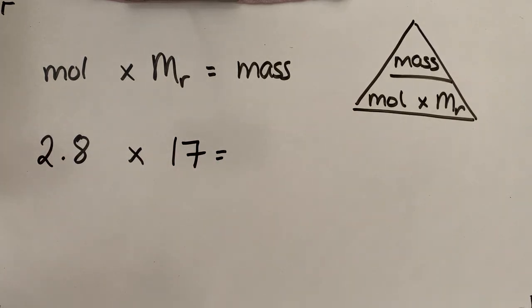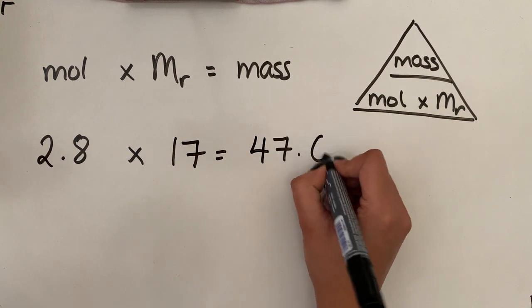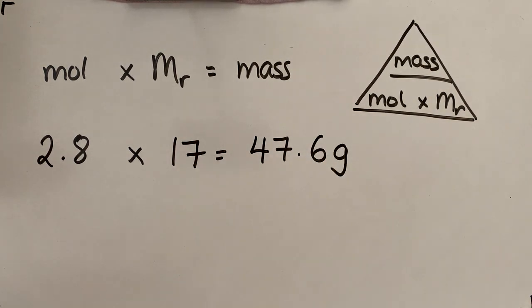So all we do is 2.8 times 17. And our mass is therefore 47.6 grams like so. Fairly straightforward to keep working through those. You've worked out the molar masses of all of those in one of the previous exercises. So that should be fairly straightforward.